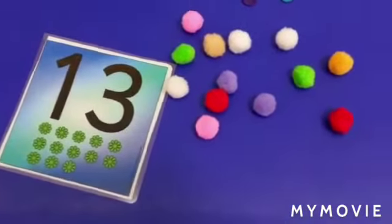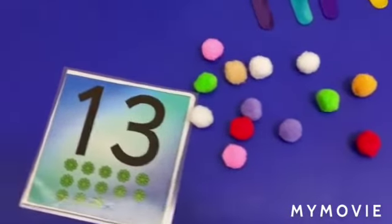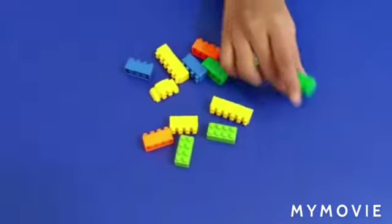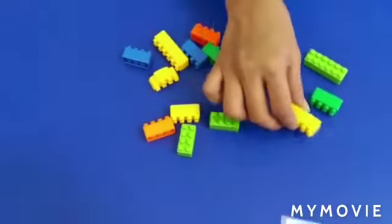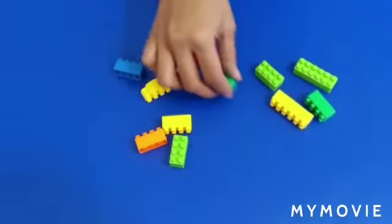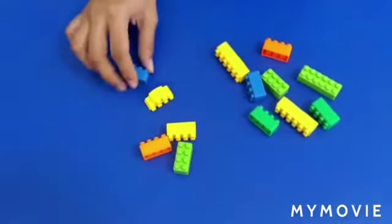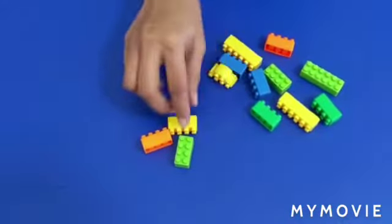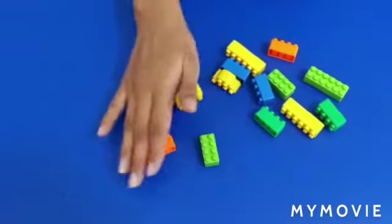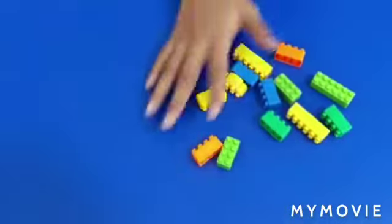Let's count. Now let's count the blocks. How many blocks do we have here? One, two, three, four, five, six, seven, eight, nine, ten, eleven, twelve, thirteen. We have thirteen blocks over here as well.